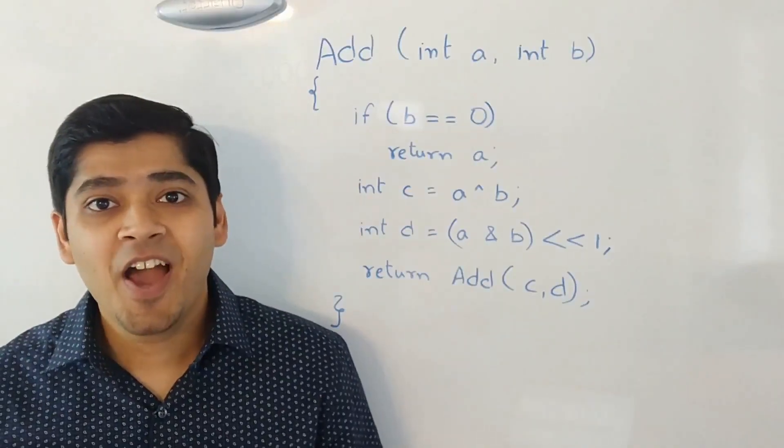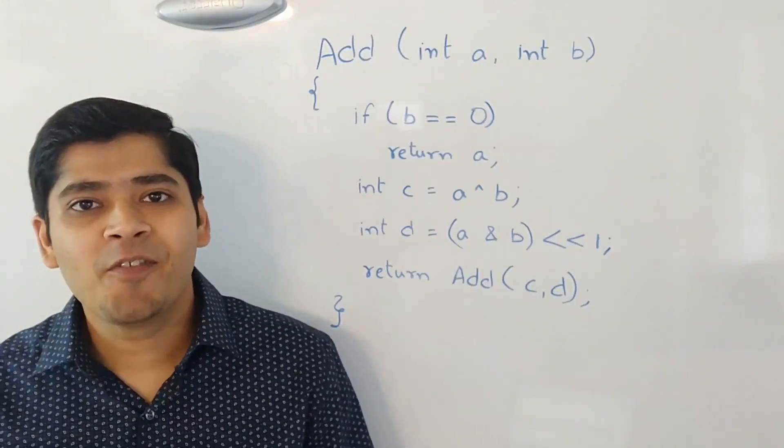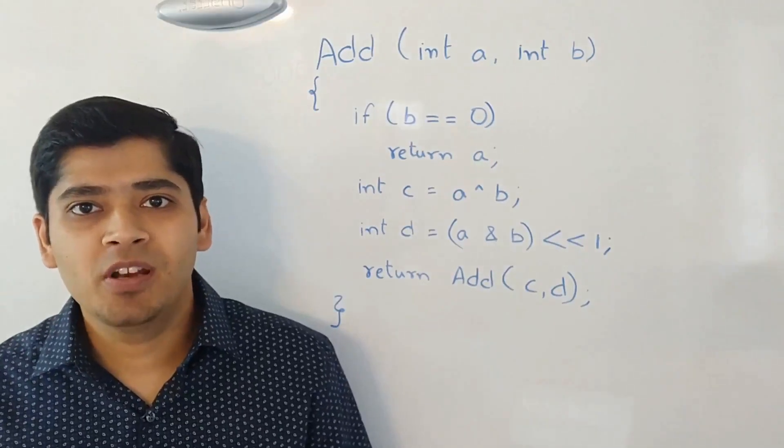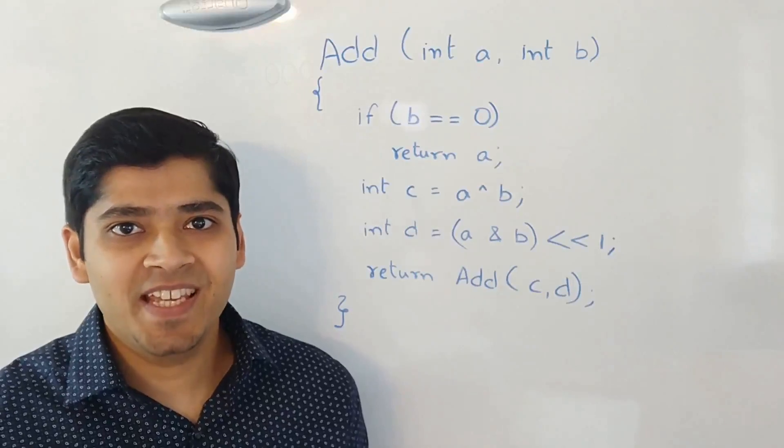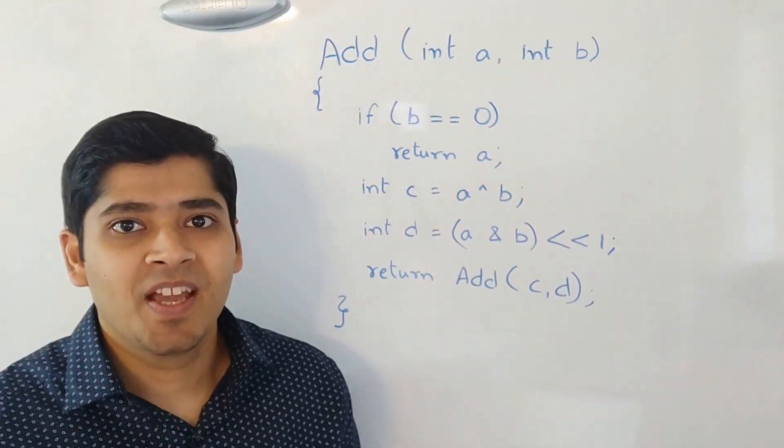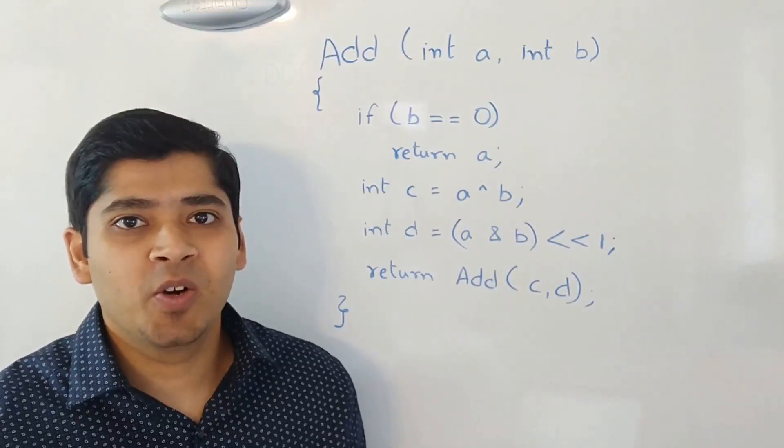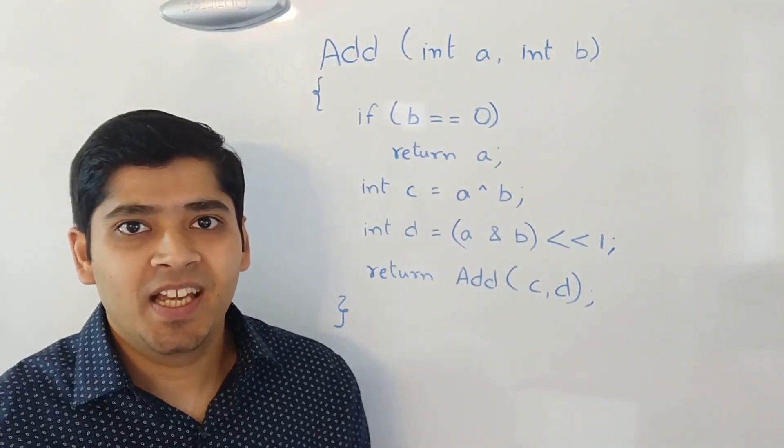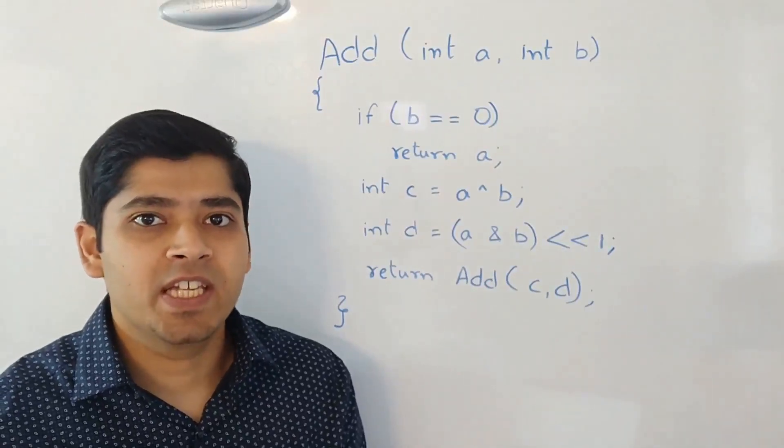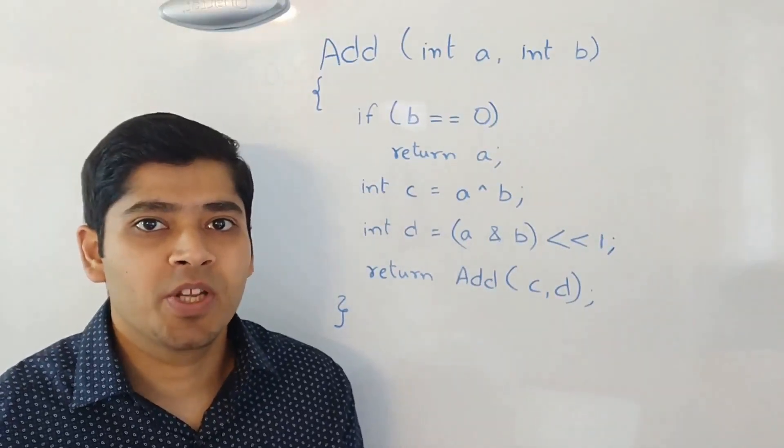Finally, how will the code look like for this problem? I have written a recursive solution on the whiteboard. As you can see, we take input two numbers A and B. We check if B is 0 then simply return A. That's the base condition that we usually have for each and every recursive operation.